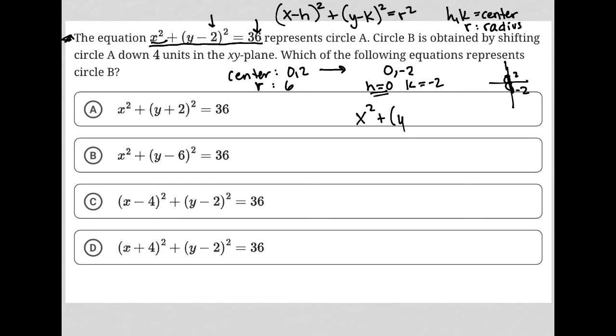But here, instead of having y minus 2, since k is negative 2, this becomes y minus negative 2, and then squared. And then the radius is not changing at all. So this is going to stay 36. So what I have left is x squared plus y plus 2 squared equals 36.